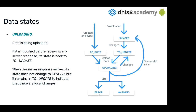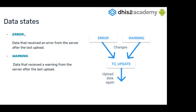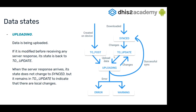If you have some error, maybe you have an error or a warning, so it's going to change the state. When you have an error from the server, it changes to the error state, and to warning when you receive a warning. When you have those states and you make changes on the property, the state is going to change again to update, so you can come back and upload the data again.